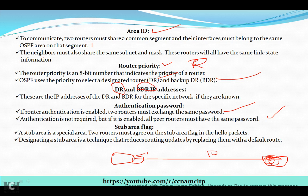One more component is the stub area flag. A stub area is a special area — two routers must agree on the stub area flag in the hello packet. Designating a stub area is a technique that reduces routing updates by replacing them with a default route. I will show how to configure stub areas practically in the next videos.